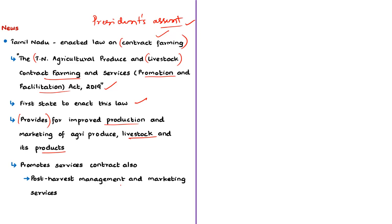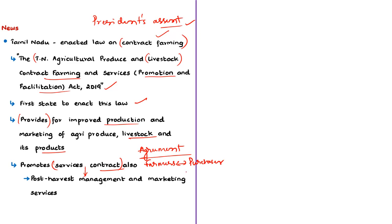The act will facilitate contracting parties to develop a mutually beneficial and efficient contract farming system. It will also promote services contracts, meaning agreements between the farmer or farmer produce organization and the services contract purchaser, in which the producer supplies the produce and the purchaser provides post-harvest management and marketing services.